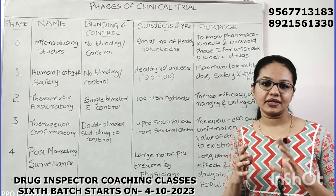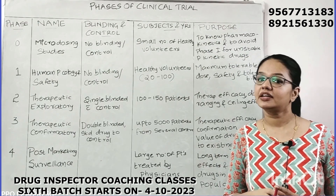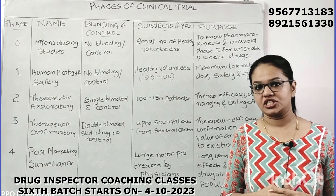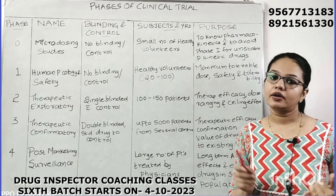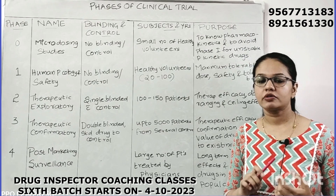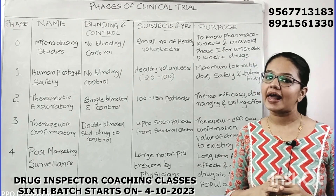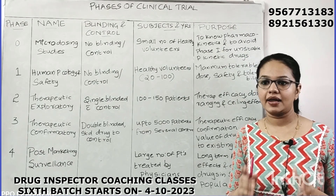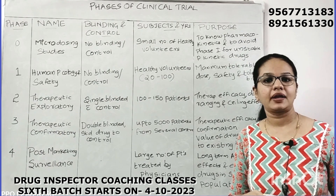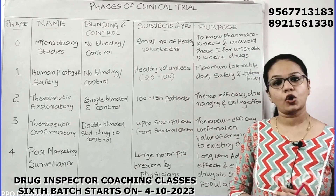Clinical trials have different phases and different stages. They mainly involve Phase 0, Phase 1, Phase 2, Phase 3, and Phase 4. We are going to perform all of these phases, starting first with Phase 0.